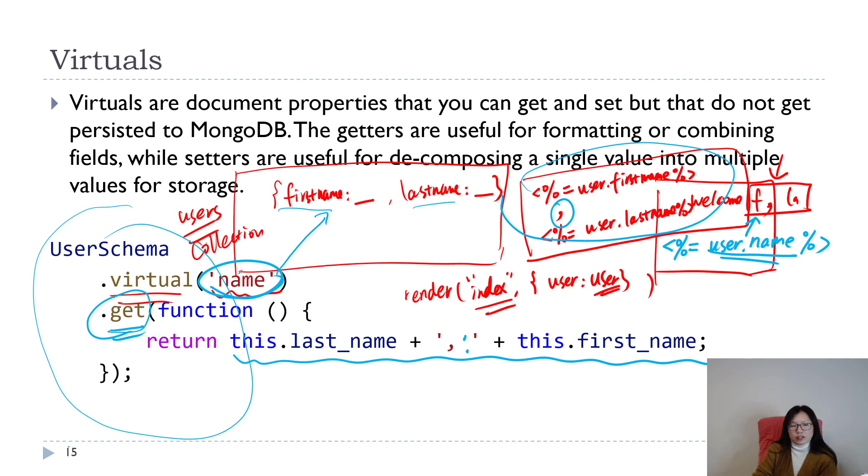Suppose later on you don't use a comma, you're using a double colon, you just change here, change it in your virtual. The virtual can continue using a set. You can also have a set to do something related to the last name and first name, where you give a callback function also.